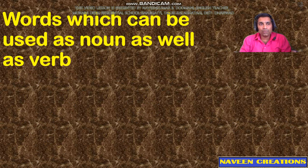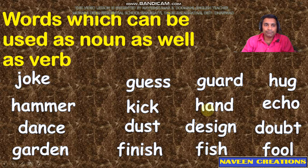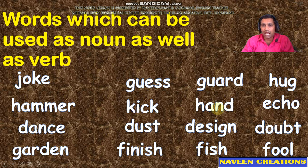Some other words that can also be used as both noun and verb are: joke, hammer, dance, garden, gas, peak, dust, finish, guard, hand, design, fish, hug, echo, doubts, fool. I have given this list of words for your practice at home, so you can be very perfect and attempt questions in this area very successfully and score full marks.